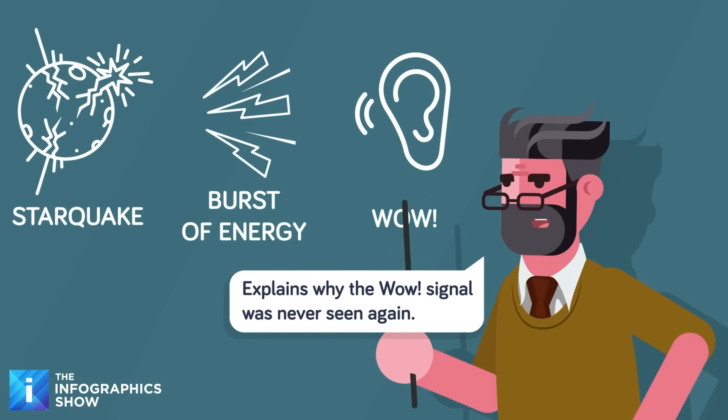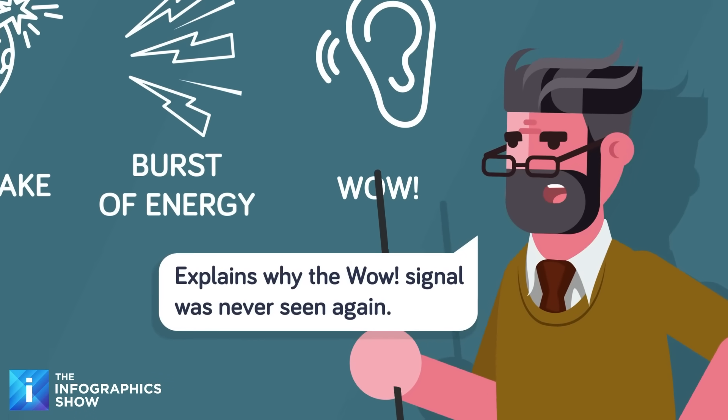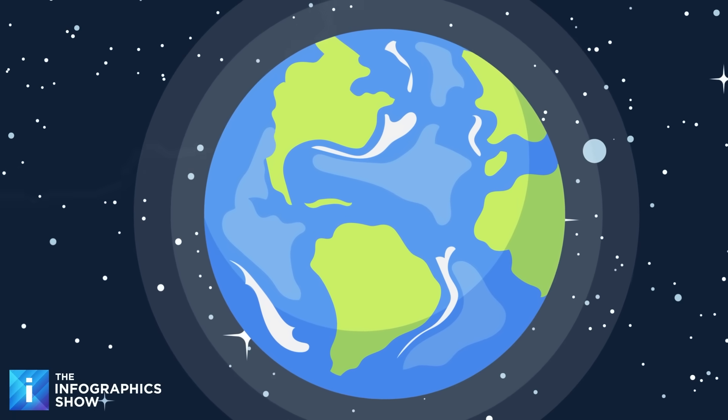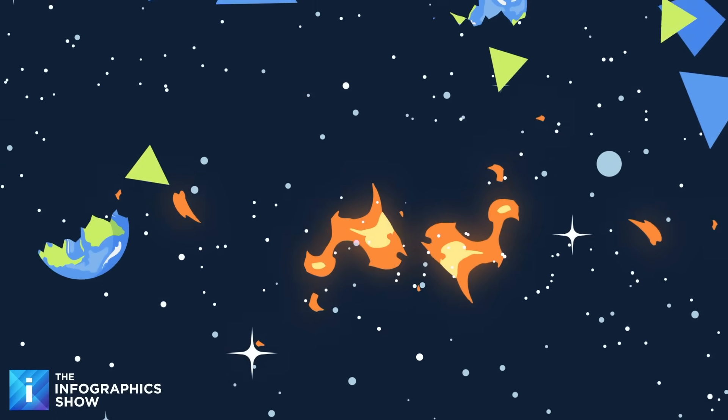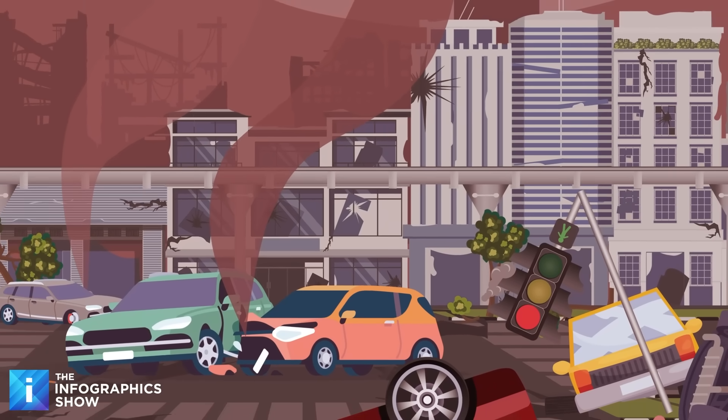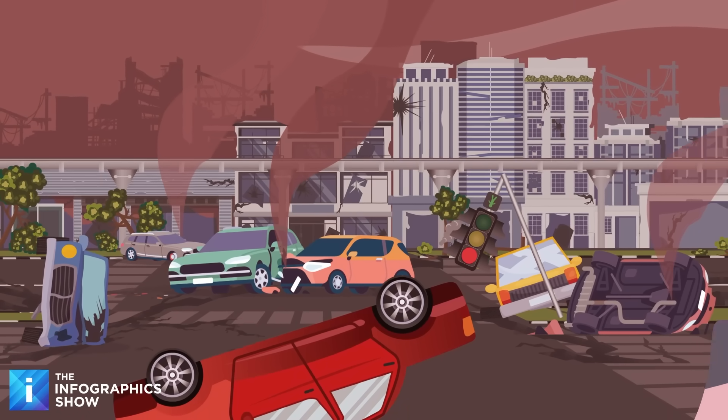It also explains why the signal was never repeated. Magnetar starquakes are rare, violent events that don't follow predictable schedules. If a magnetar within 10 light years of Earth experienced a major starquake, the radiation burst could strip away our ozone layer and trigger a mass extinction event. The wow signal might not have been a friendly hello from the cosmos. It could have been a reminder of just how dangerous the universe really is.